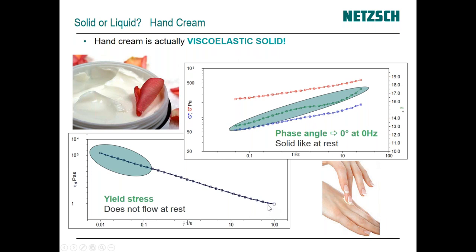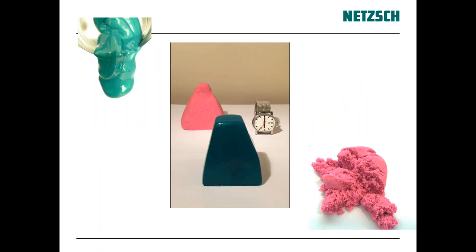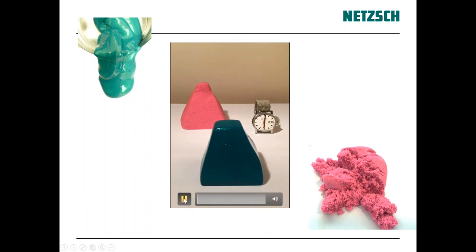When you look at the flow properties of this material, you can see it has a yield stress — it has structure. It's not going to give us a zero shear viscosity plateau. The lower the shear rate we go, the higher the viscosity we're going to see.